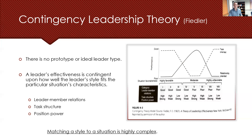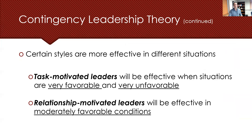Those situations in the middle are known as moderately favorable. It's important to consider how to match a style to a particular situation, and that can be pretty complex from time to time. In summary, task-motivated leaders can be more effective when situations are very favorable or very unfavorable, and relationship-motivated leaders will be effective in moderately favorable conditions.